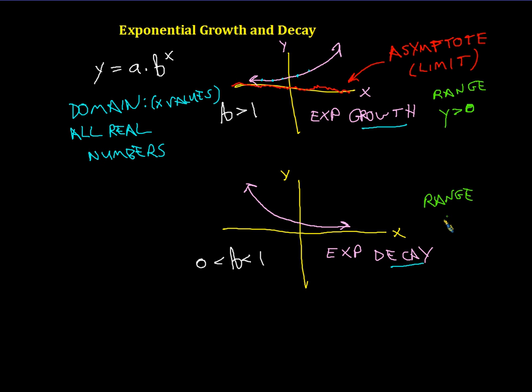The range for decay is also only going to have y values that are greater than zero. So even decay has an asymptote at y equals zero, or also known as the x-axis. And so therefore, the exponential decay function will also have y values that are greater than zero. So the range for both of these is y is greater than zero, and the domain for both of these is all real numbers.